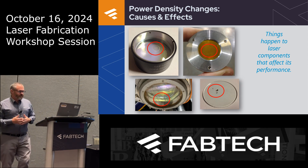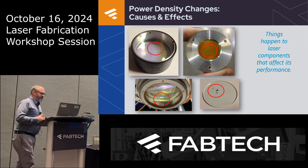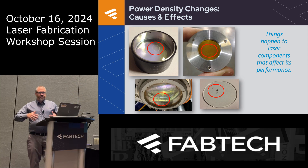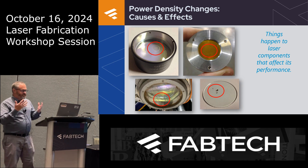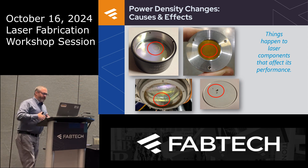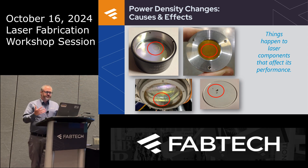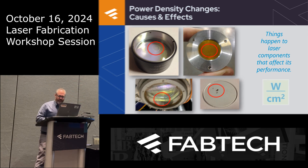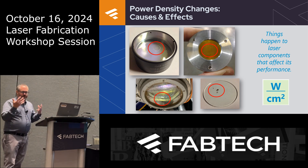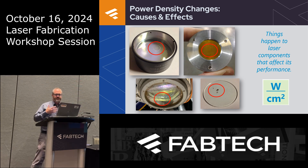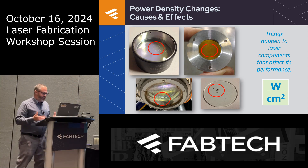Things happen to laser components that affect performance over time. These high-power lasers are often working in very harsh environments — additive manufacturing, processed debris, powder — many different things can affect the optics on laser systems. All of this is going to affect the power density: the amount of light in watts (the numerator) versus the beam size (the denominator) — how large a beam is being applied to the process.